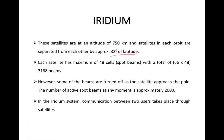Each satellite has a maximum of 48 spot beams, so 48 cells are covered by each satellite, with a total of 66 times 48 — that is 3,168 total beams, or total cells, covered by the 66 satellites.